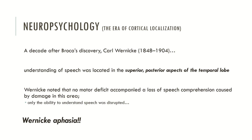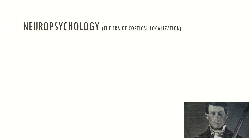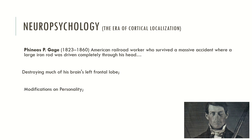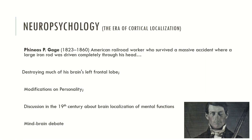Another case very important to the understanding of cortical localization was Phineas Gage, an American railroad worker who survived a massive accident where a large iron rod was driven completely through his head, destroying much of his brain's left frontal lobe. Phineas Gage recovered from the accident; however, his family and friends began to notice modifications in his personality, suggesting a link to the destruction of a specific brain area. This raised issues and fostered debate in the 19th century about the brain localization of mental functions and the mind-brain interaction.